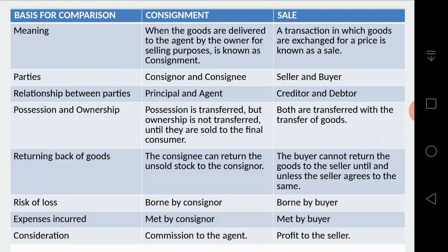In a sale, goods are always exchanged and a price is given in return. In sale, the position and ownership of goods are transferred to the buyer. But in consignment, goods are only sent from one person to another for the purpose of being further sold. The parties involved in consignment are the consigner and consignee, while in sale there are only the seller and buyer. The consigner is the person sending the goods and the consignee is the person receiving them.